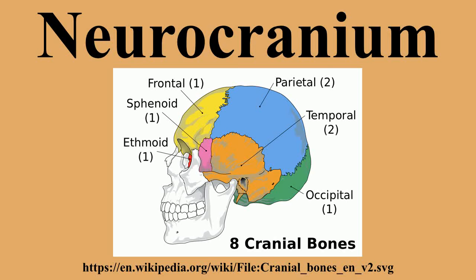Below the neurocranium is a complex of openings and bones, including the foramen magnum, which houses the neural spine. The auditory bulli, located in the same region, aid in hearing. The size of the neurocranium is variable among mammals.